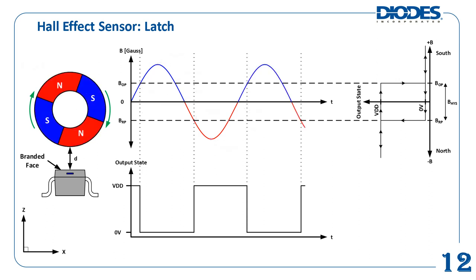As the ring magnet continues rotating clockwise, it repeats the cycle of turning on and off the latch Hall Effect sensor, toggling its output state between zero volts and VDD. An application example that can use the latch Hall Effect sensor is in cordless power tools, such as a cordless drill. The multipole ring magnet and Hall Effect latch combination measures the rotational speed of the drill's motor as it spins.